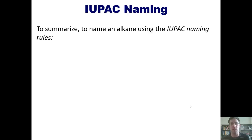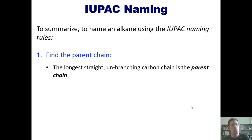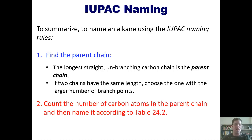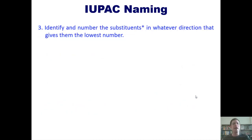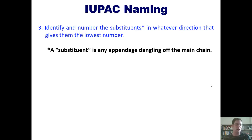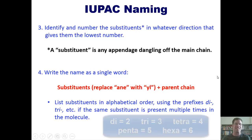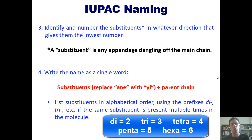To summarize, to name an alkane using the IUPAC naming rules: first, find the parent chain — the longest straight unbranching carbon chain. If two chains have the exact same length, choose the one with the largest number of branch points. Second, count the number of carbon atoms in the parent chain and name it according to table 24.2, which students are required to memorize. Third, identify and number the substituents in whichever direction gives them the lowest number — substituents being any appendages dangling off of the main chain. Fourth, write the name as a single word, replacing the '-ane' suffix of substituents with '-yl' and listing them in alphabetical order before the parent chain, using prefixes di, tri, tetra, penta, and so forth if the same substituent appears multiple times.